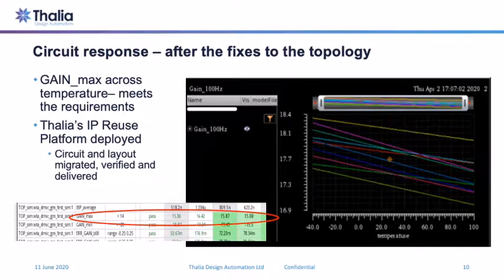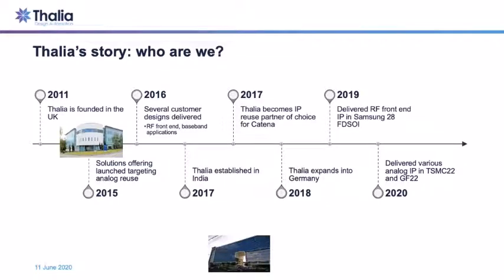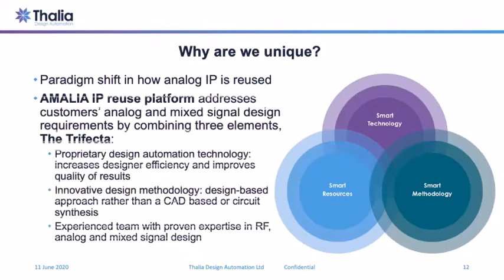I founded Thalia back in 2011. The primary motivation was to improve overall efficiency and reduce the cost of analog circuit design, primarily by rolling out a unique analog IP reuse platform. Over the last several years we have partnered with a few IP vendors and deployed our capability in numerous foundries and nodes. We are headquartered in the UK with design centers in Germany and India. At Thalia, we are bringing about a paradigm shift in the way analog IPs are reused through a unique platform called Amalia IP Reuse Platform, which is a combination of proprietary technology, methodology, and design capability — what we call the trifecta.